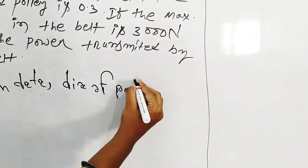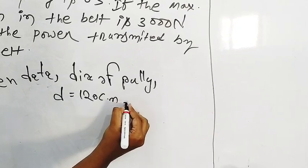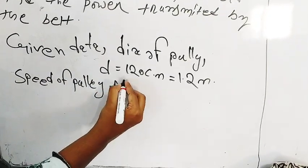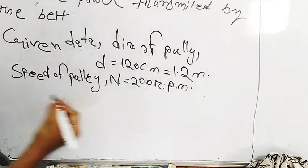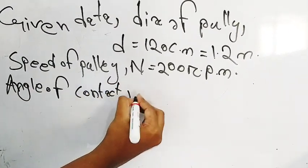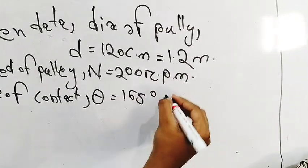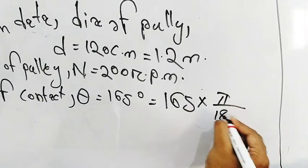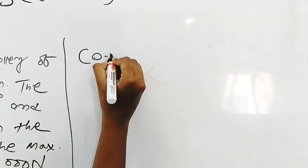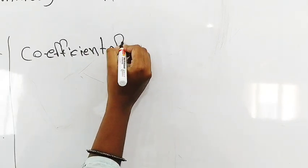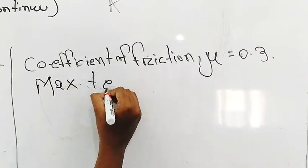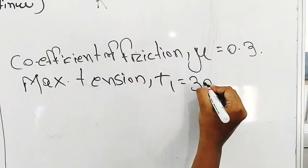So let's start. Diameter of pulley, D is equal to 120 cm is equal to 1.2 meter. Then speed of pulley, N is equal to 200 rpm. Theta is equal to 165 degree. If we convert degree to radian, it's 165 into π by 180 radian. So next is coefficient of friction, μ is equal to 0.3. The maximum tension T1 is equal to 3000 newton.